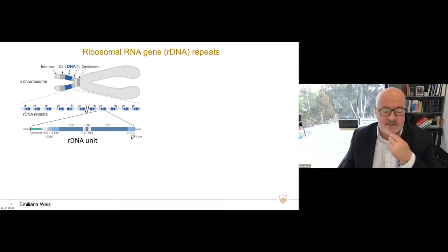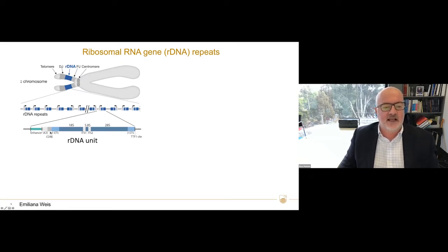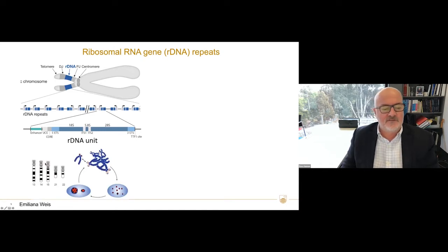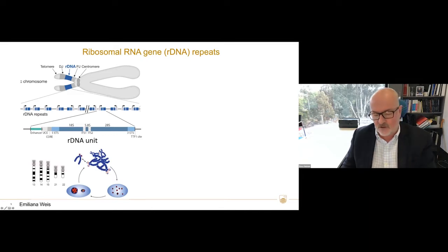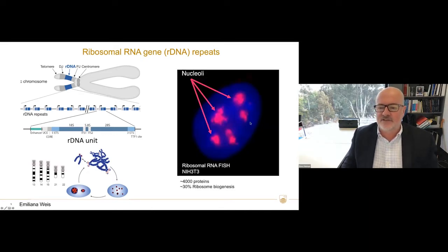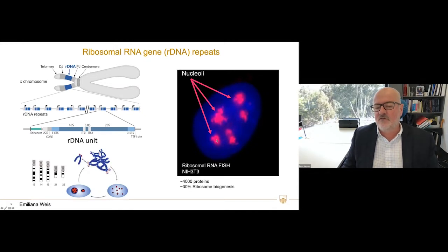The rDNA repeats are unique in that you have up to 400 copies arranged in head-to-tail fashion. Each rDNA unit has a promoter, an enhancer, and then the 18S, 5.8S, and 28S sequences, transcribed exclusively by RNA polymerase 1. These are found on the acrocentric chromosomes, and through phase condensation the five different chromosomes coalesce into the nucleoli. The nucleoli have evolved to undergo many other processes in addition to ribosome biogenesis — there are up to 4,000 different proteins of the nucleolus, and only 30% of them relate to ribosome biogenesis.